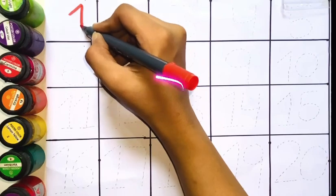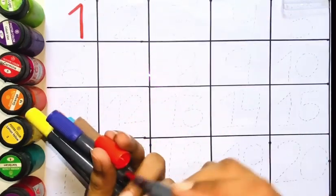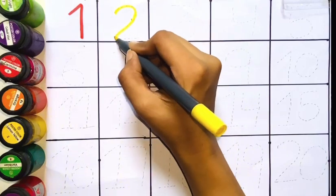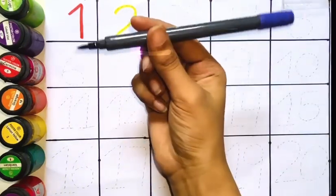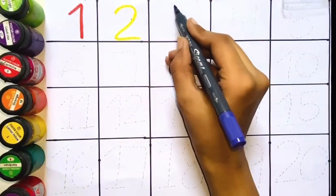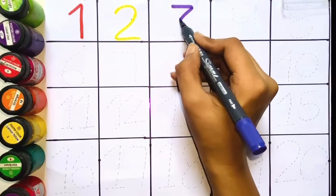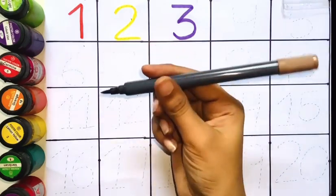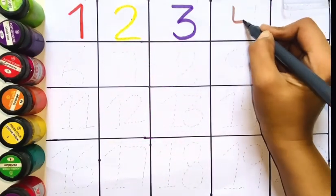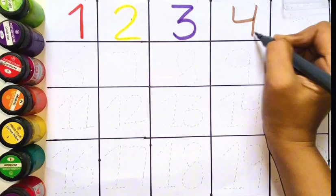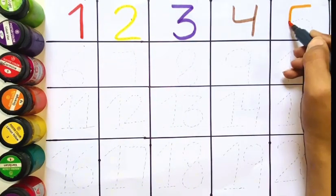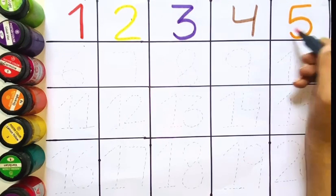One. Red color. Two. Yellow color. Three. Purple color. Four. Brown color. Five. Orange color.